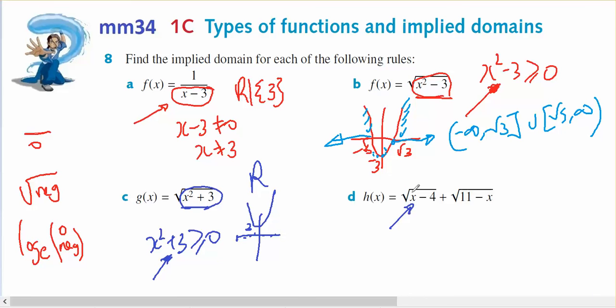Now for part d, I've got two conditions, like two different things being added together. In this particular domain, x minus 4 has to be bigger than or equal to zero. So x bigger than or equal to 4.